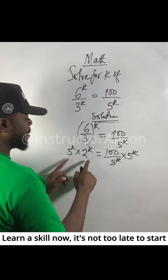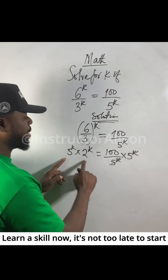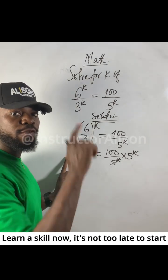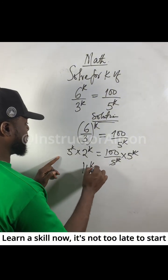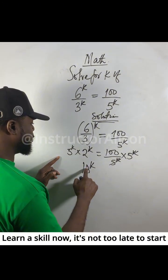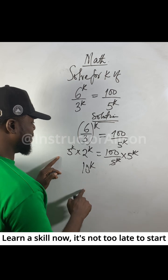When the powers are the same but the bases are different, if you multiply the bases, take one of the common powers. Five times two is ten, so 10 to the power of k.